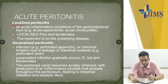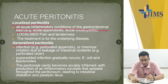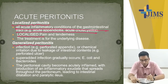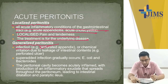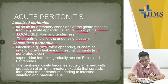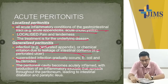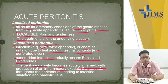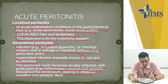Acute peritonitis can be localized or generalized. All acute inflammatory conditions of the GI tract like acute appendicitis and acute cholecystitis lead to localized peritonitis with localized pain and point tenderness. Treatment is of the underlying disease. Generalized peritonitis results from a perforated appendix or chemical irritation due to leakage of intestinal contents. Superadded infection gradually occurs with E. coli and bacteroids. The peritoneal cavity becomes acutely inflamed, leading to intestinal dilatation and paralytic ileus.